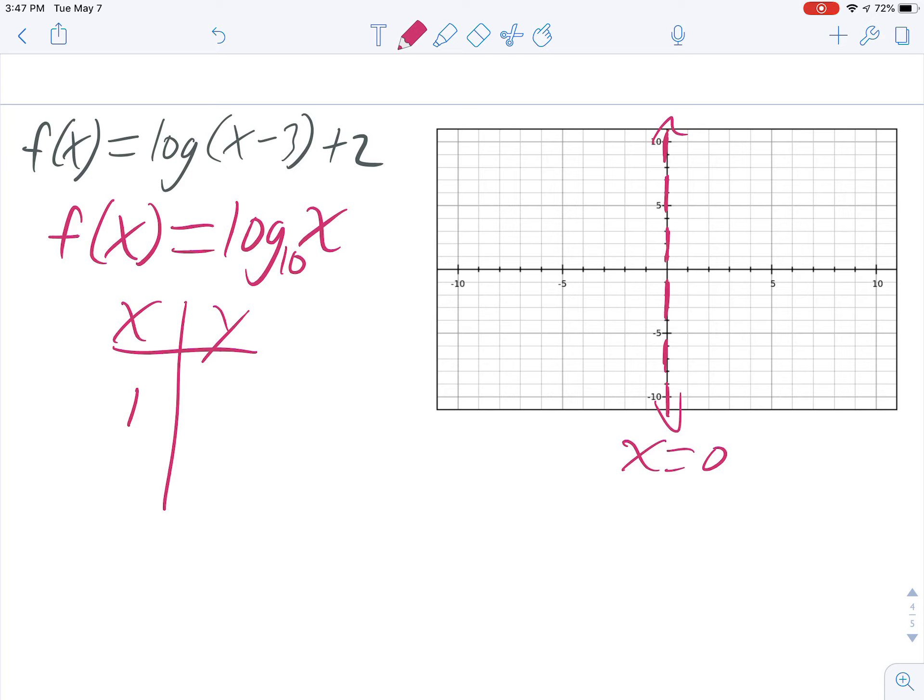So the question becomes 10 to what power equals 1? And the answer to that is 0. And so 1, 0 is a critical point on our parent function. And then the next piece is, what's another friendly number we can get?